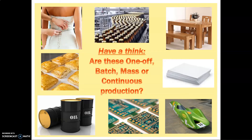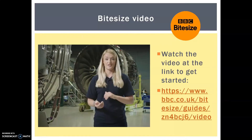Now hopefully you're at least familiar with these terms. I'd like you to pause the video for a second, look at these pictures, and decide which ones might be one-off, batch, massed, or continuously produced. We'll look at the answers in a quick second. First I'd like you to watch this introductory video which will give you a really good overview.